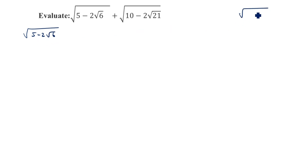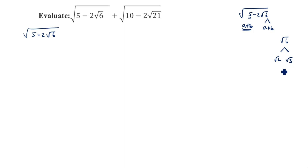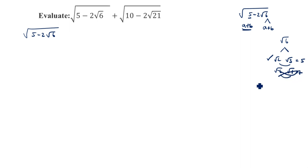How will we split √(5 - 2√6)? We need to split it into A plus B format. For root 6, the ways to write it are: √2 · √3, or √6 · √1. If we add √2 and √3, we get 5. If we add √6 and √1, we get 7. Since the question gives us 5, we take √3 · √2.